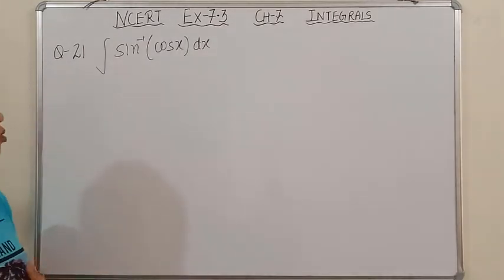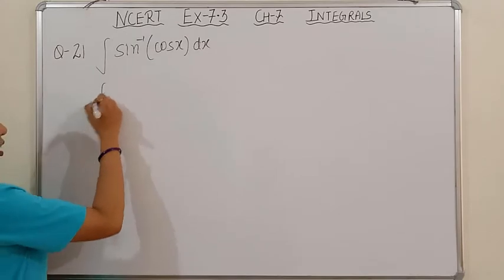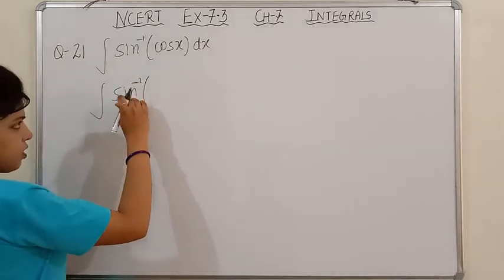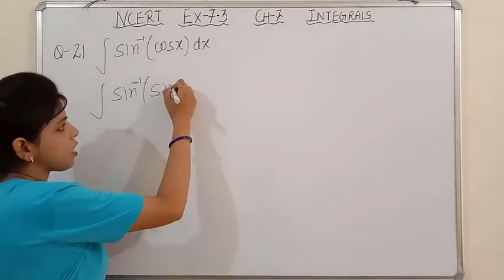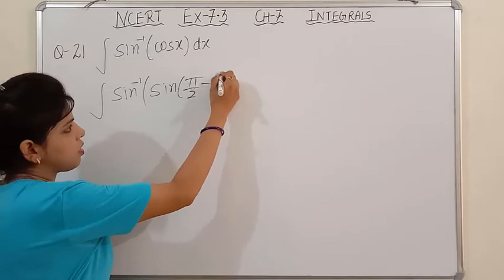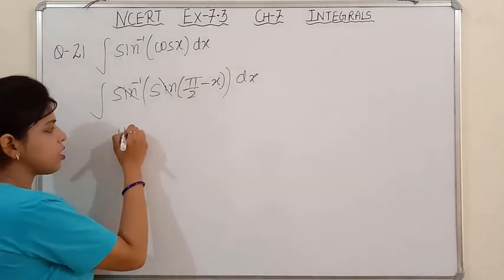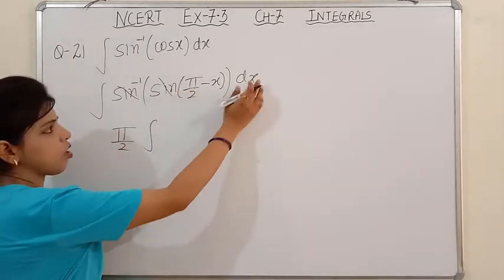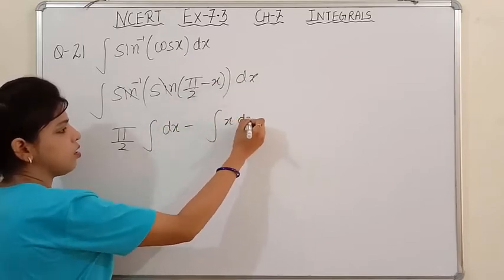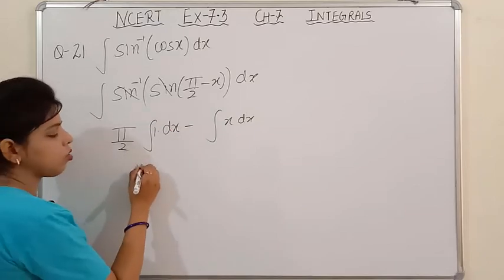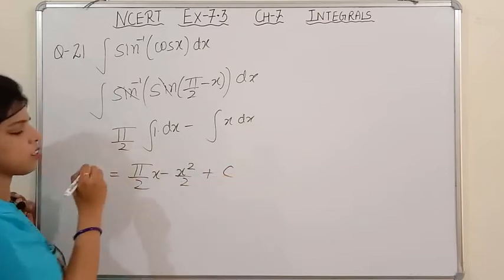Question number 21: integration of sin⁻¹(cos x). This looks a bit complicated but it is not at all. Since we have sin inverse, we need to bring the inside to sin form. We can write cos x as sin(π/2 - x). So sin⁻¹ and sin cancel, leaving ∫(π/2 - x) dx. π/2 is a constant, so the integration gives: π/2 · x - x²/2 + C. This is the answer, please note down.